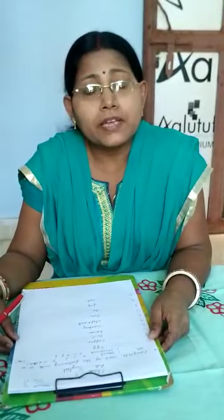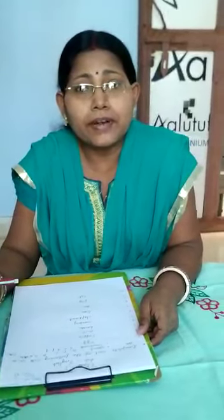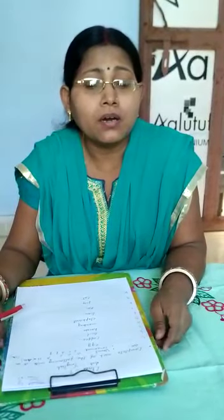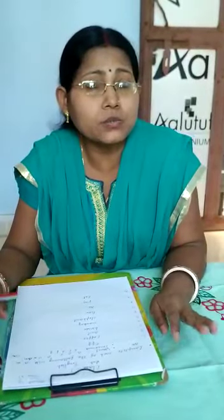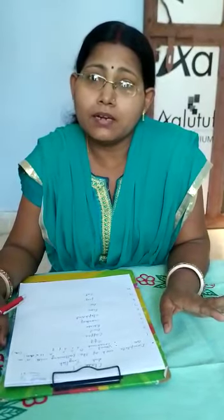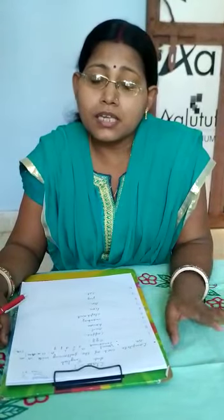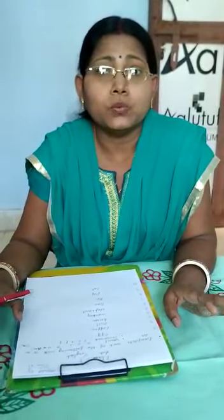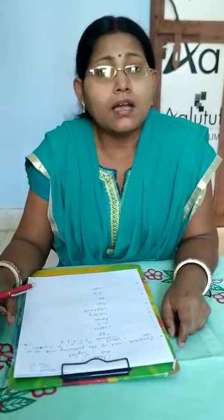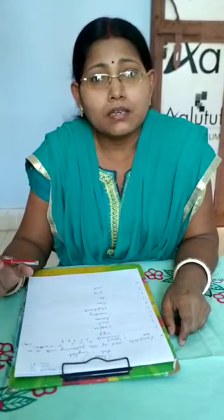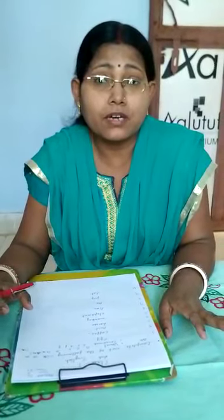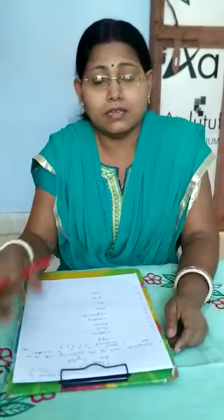First of all, in alphabets there are 26 letters. In these 26 letters there are two parts. The first part is vowels. What are vowels? A, E, I, O, U — these are vowels. And the rest of the letters are B, C, D, F — these are our consonants.